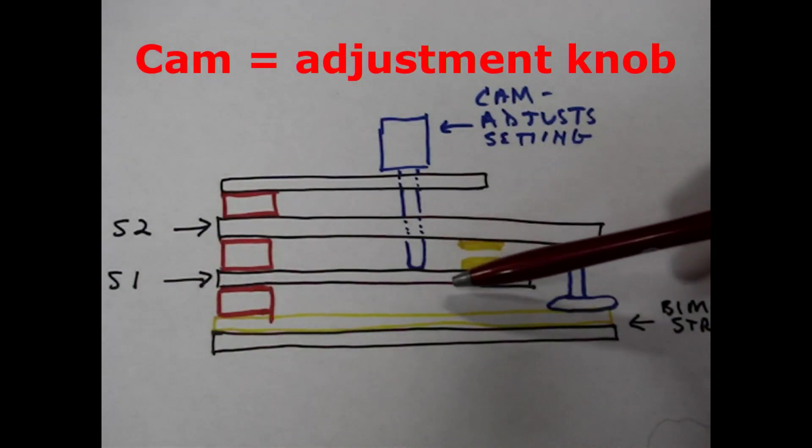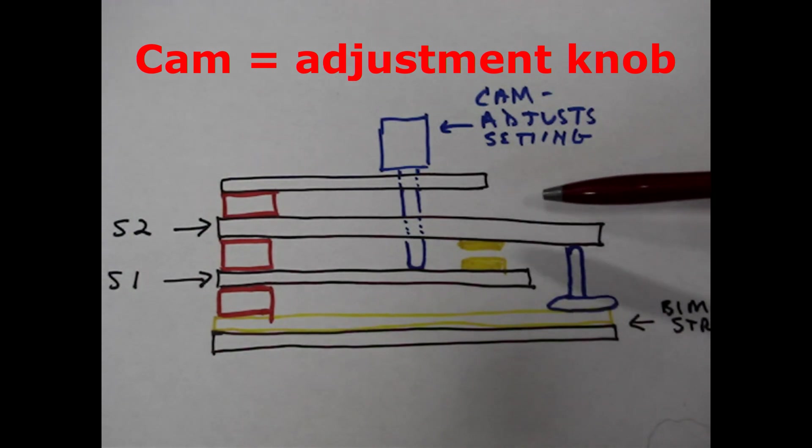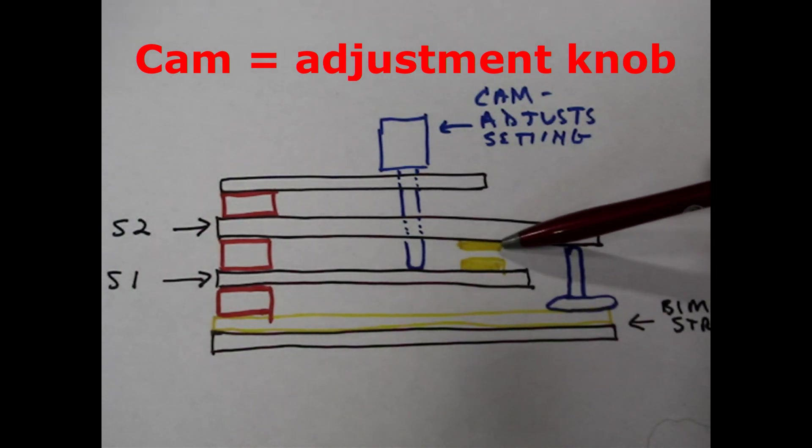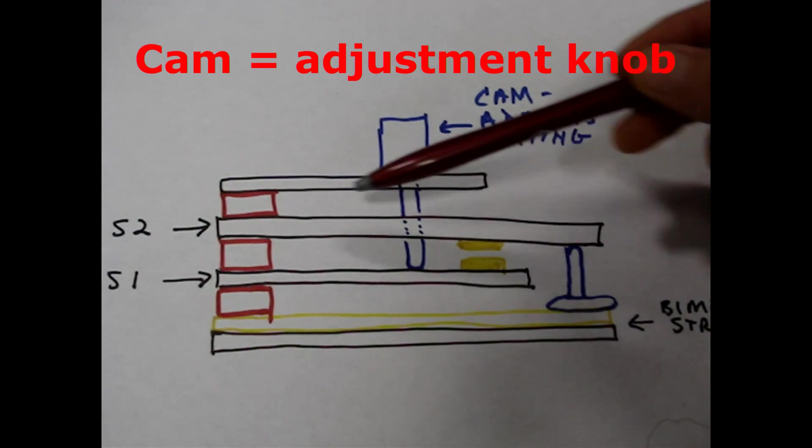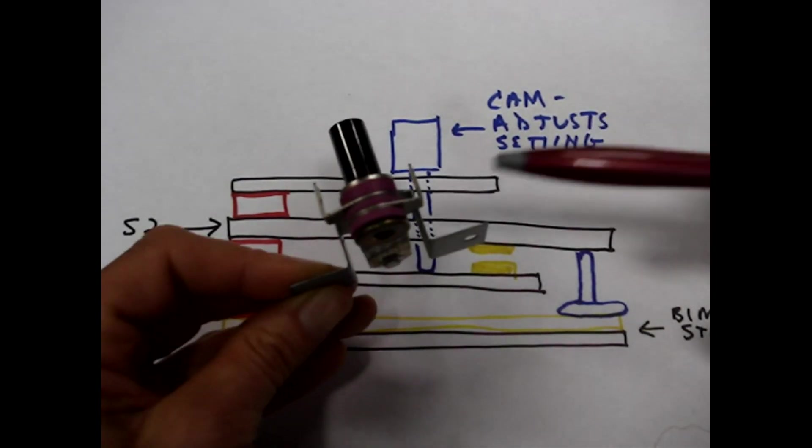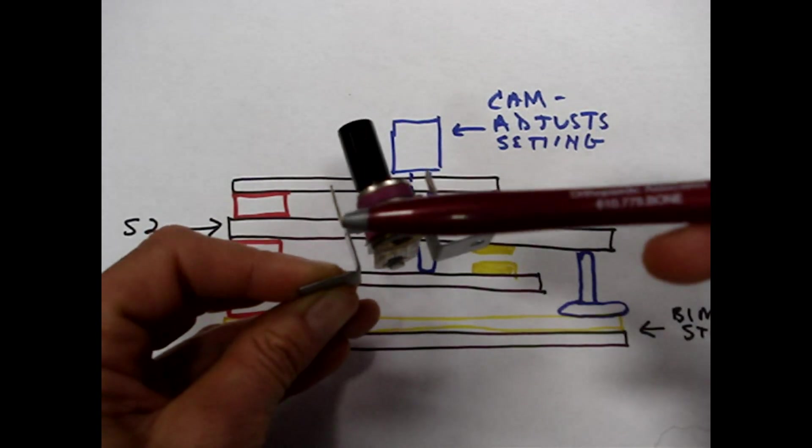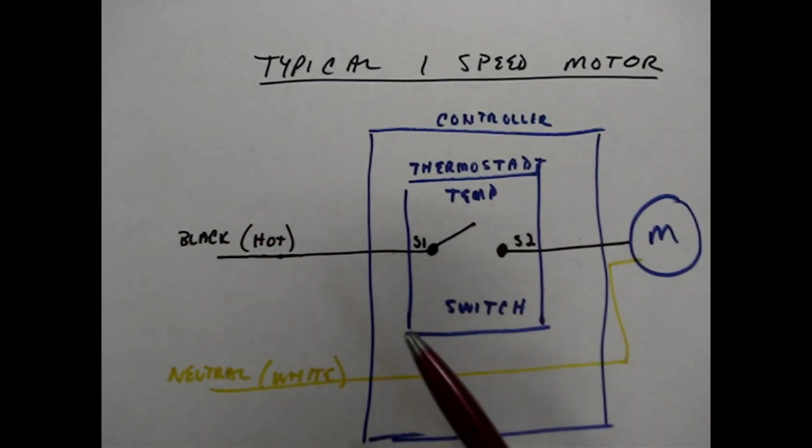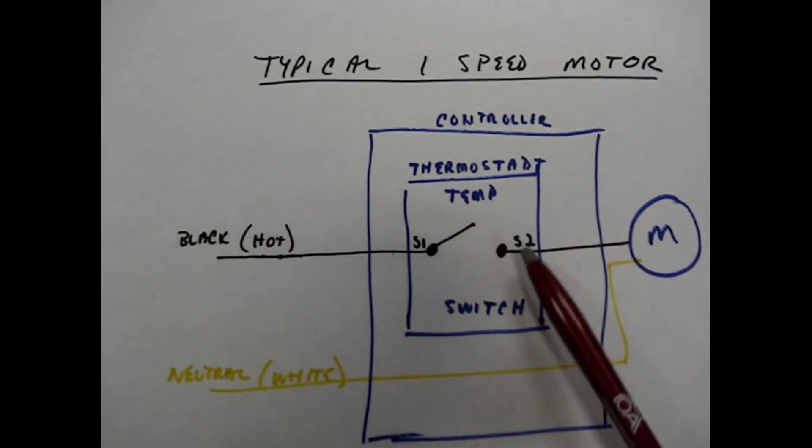To adjust the temperature setting, the cam moves up and down and adjusts the spacing of the two contacts on these two metal plates. Since the two metal plates have terminals, the hot wire is connected to those two terminals.